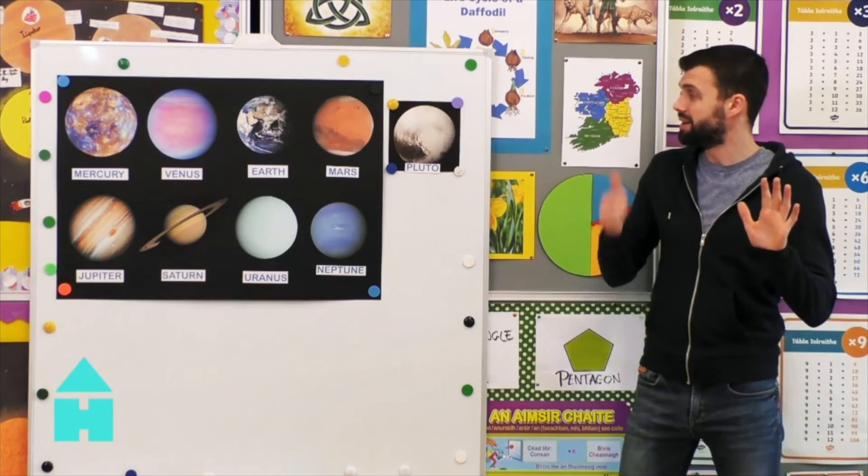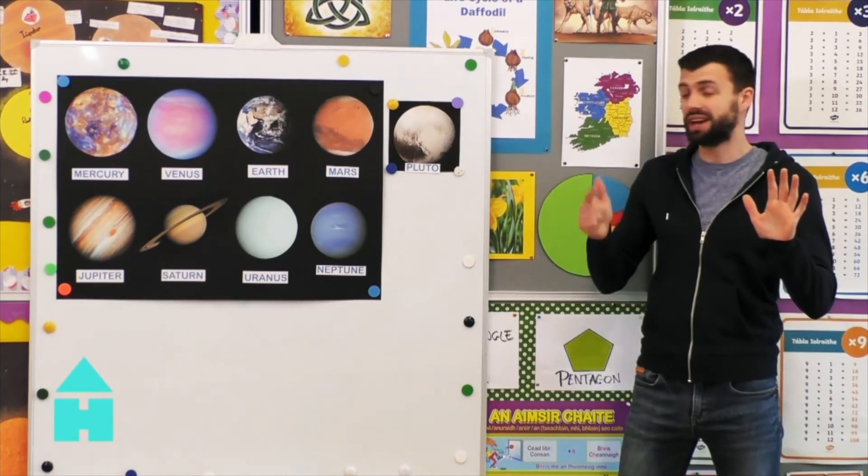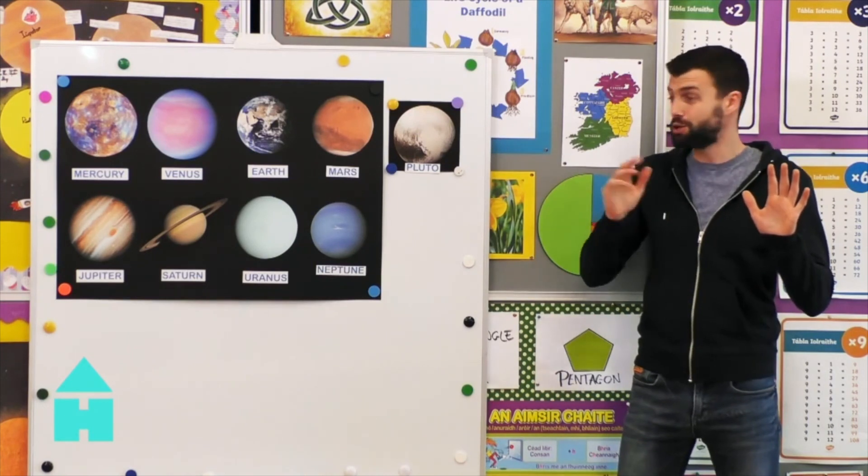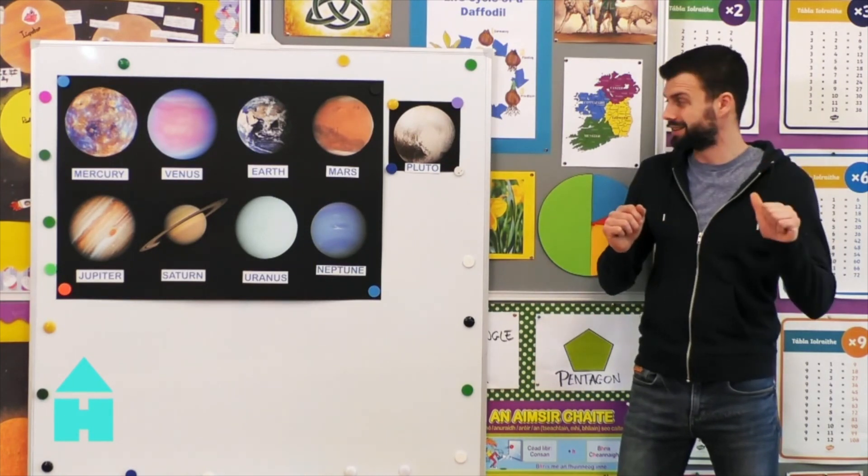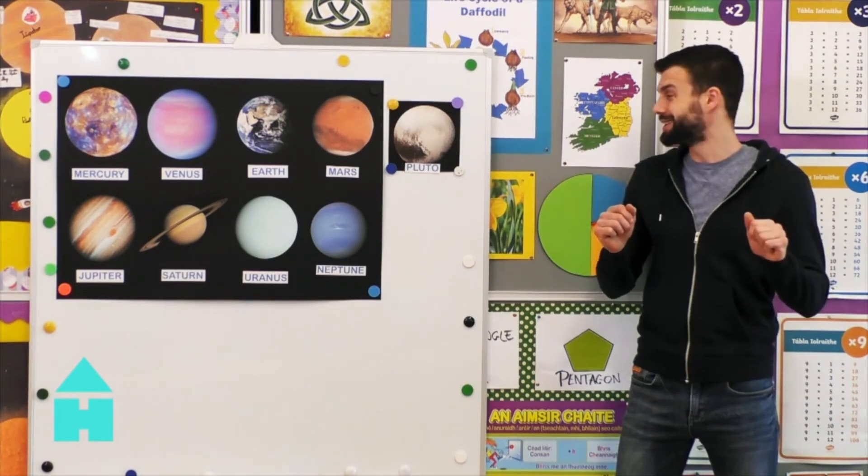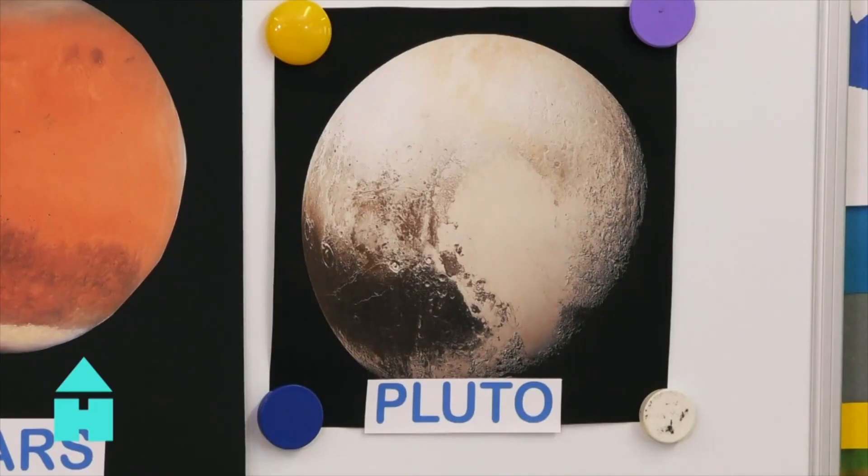My, Mercury, very, Venus, educated, Earth, mother, Mars, just Jupiter, showed Saturn, us Uranus, nine Neptune, and P, Pluto or planets.